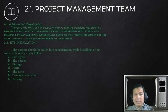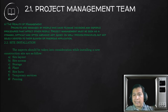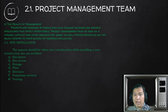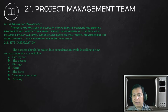Now let's go to site installation. The aspects that should be taken into consideration while installing a new construction site are as follows. First is the site layout. Then the site access — how you're going to access the site. You have to think about site access especially when planning for the delivery of construction materials, such as where your heavy equipment will pass going to the site and where your employees will move.